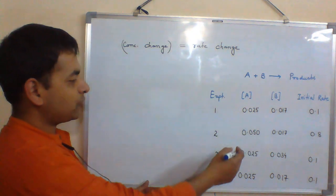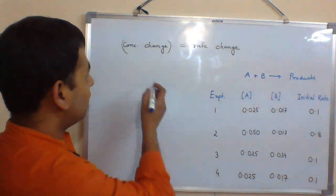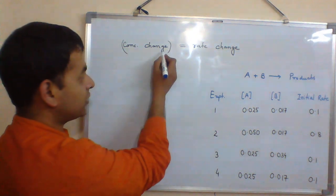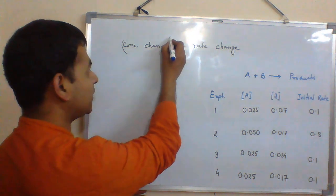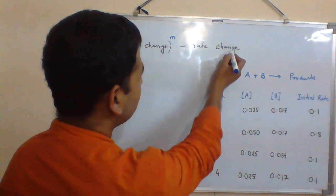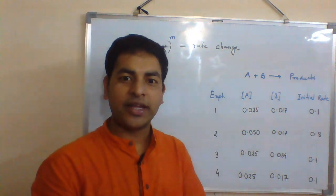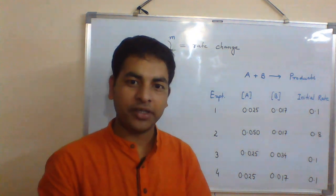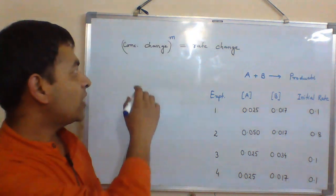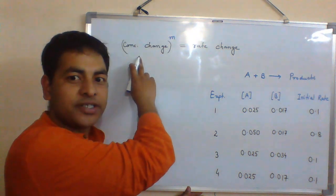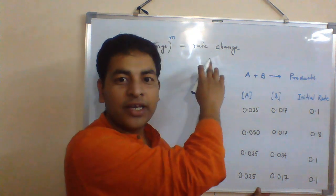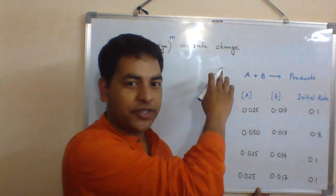In order to solve this problem, simply remember this trick: concentration change power something, let's say M, equals rate change. In this case, change does not mean final minus initial. Change means how many times concentration is increasing or decreasing and how many times rate is increasing or decreasing.